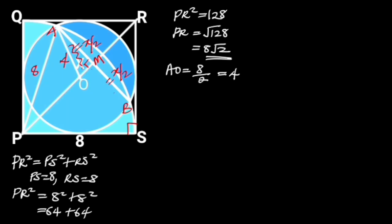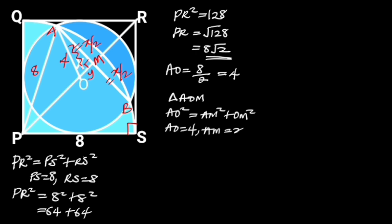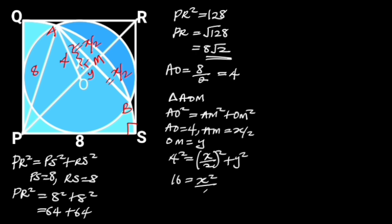Now let's focus on triangle AOM. In triangle AOM, let OM be Y. From Pythagoras' theorem, AO squared is equal to AM squared plus OM squared. AO is equal to 4, AM is equal to X over 2, and OM is equal to Y. Substituting these values in the formula will give us 4 squared is equal to X over 2 squared plus Y squared. Simplifying this will give us 16 is equal to X squared over 4 plus Y squared. Let this be equation 1.